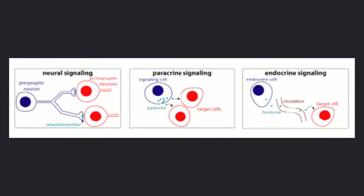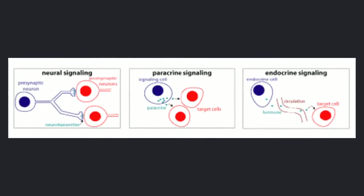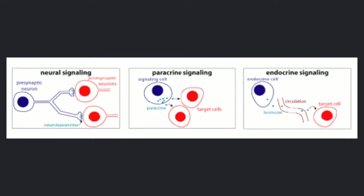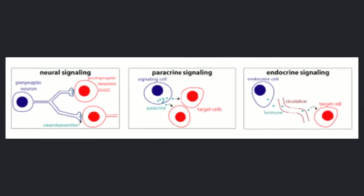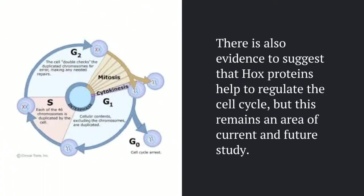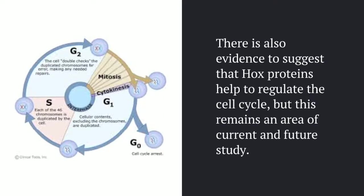Here's a recap of the three kinds of signaling: neural, which takes place through nerves and neurons; paracrine, which takes place through cell-to-cell contact; and endocrine, which takes place through the extracellular matrix. Finally, one ambitious research project for Hox genes is determining their role in the cell cycle. This isn't fully understood yet, but through deactivation and activation of Hox genes, scientists have noticed an impact on the cell cycle, so this remains an area of future study.